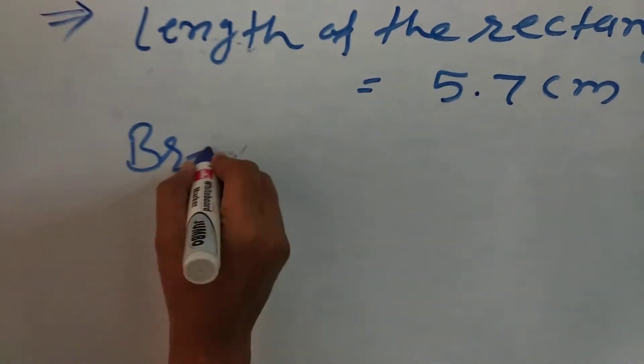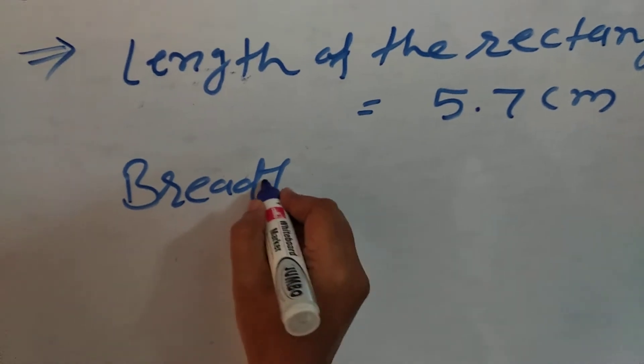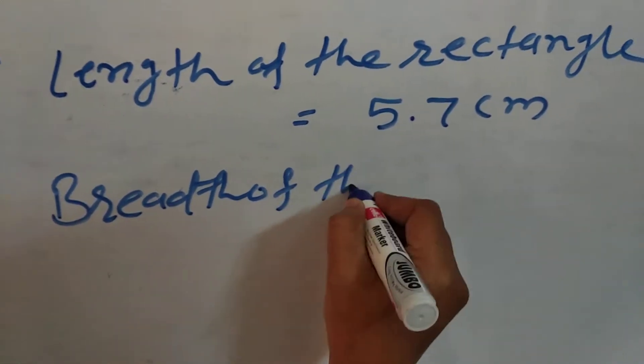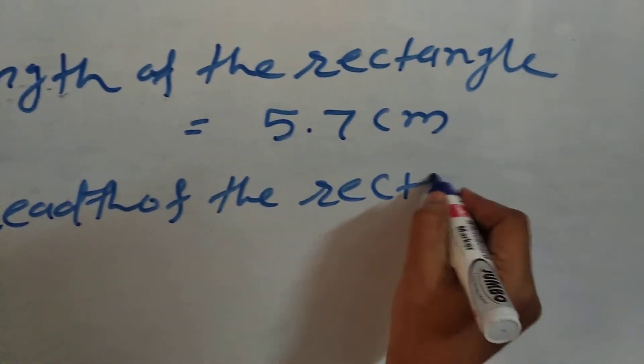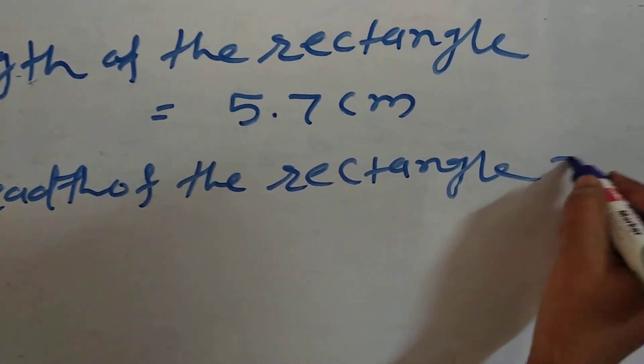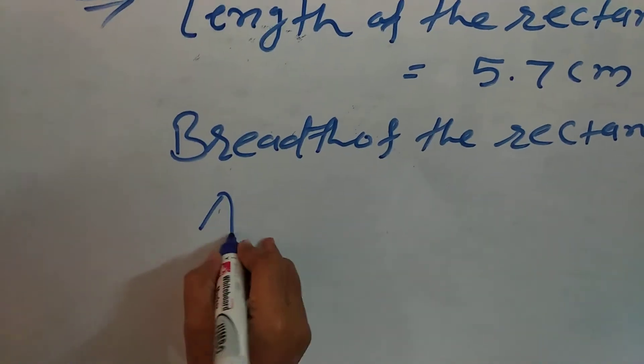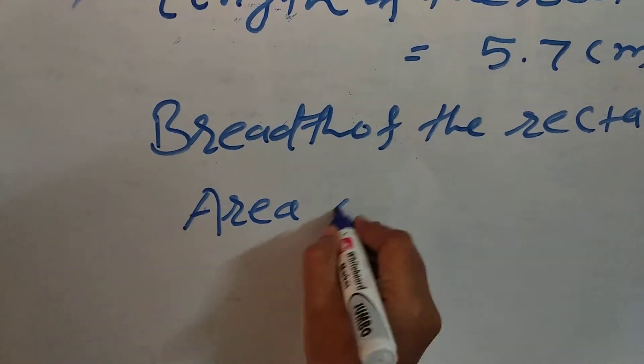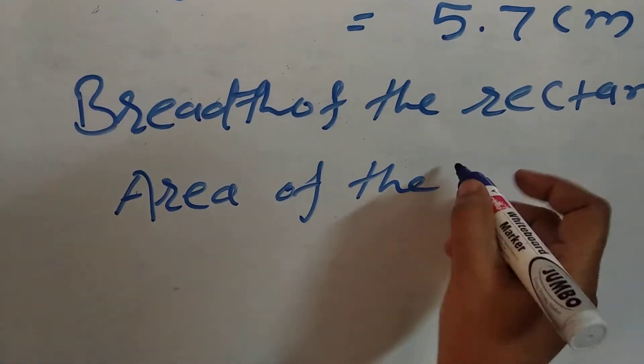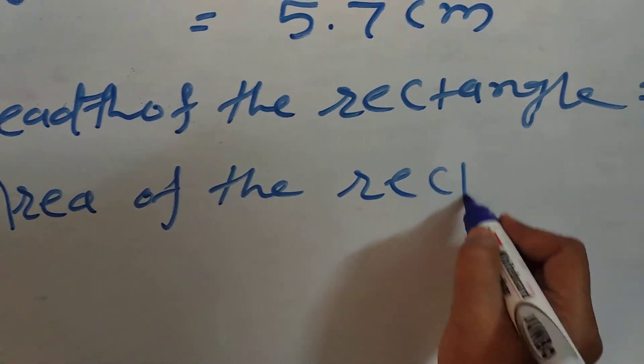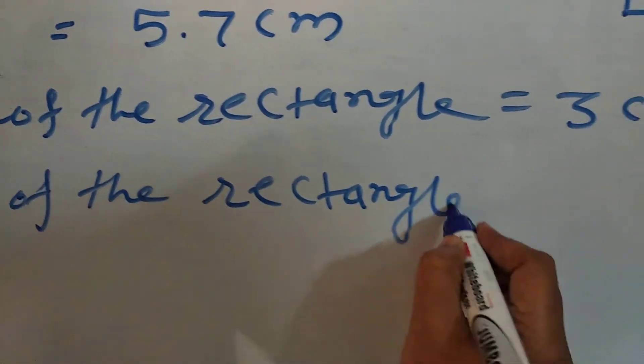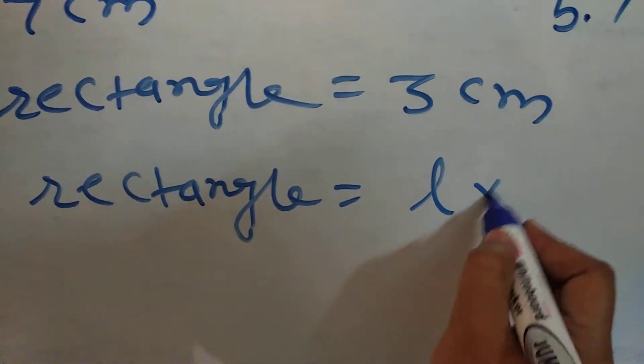Then, breadth of the rectangle is equals to 3 cm. And we have to find out the area. So, write the formula for area of the rectangle is equals to length into breadth.